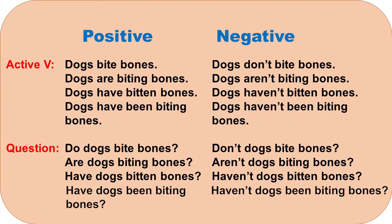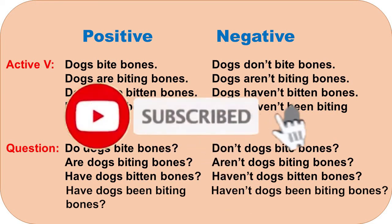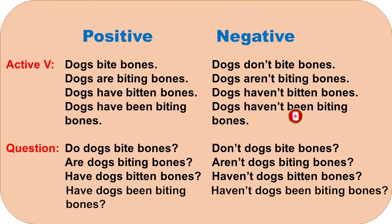These sentences are in the present tense in all forms with positive and negative modes. They include questions also. Future lessons will be in the past and future tenses. I will also present them to you in passive voice. Constant repetition of sentences like these will make your English speech and writing perfect. So, best of luck.